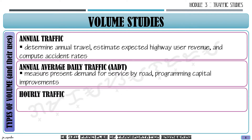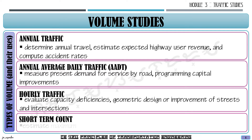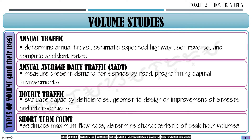The next type is hourly traffic — the volume of vehicles or persons measured per hour. It is used to evaluate capacity deficiencies of a road section and for the design or improvement of streets and intersections. Lastly, short-term counts are used to estimate maximum flow rates and to determine the characteristics of peak volume.